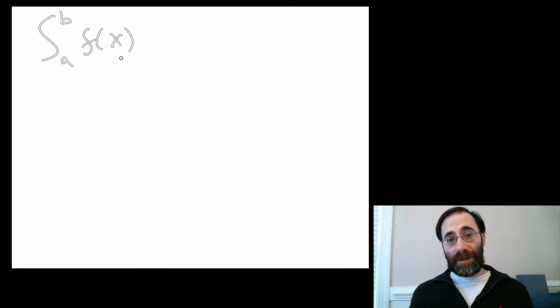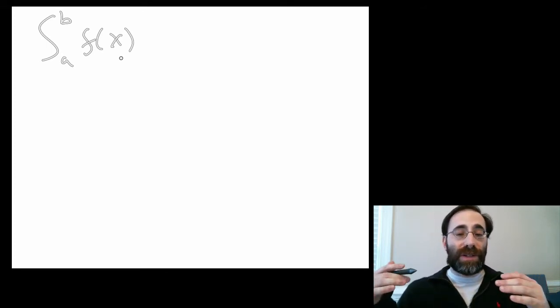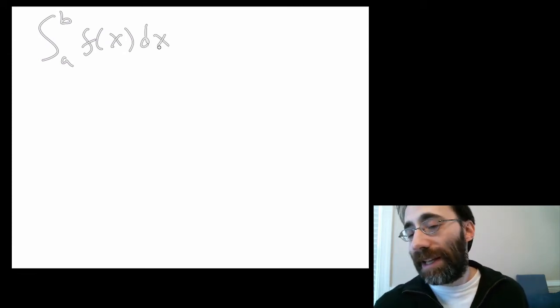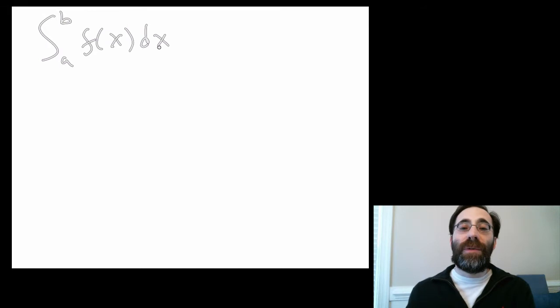f of x here is the integrand. It's the function you're integrating. It's the function whose area under which you care about. And this dx is the infinitesimal and tells you which variable you're integrating over.